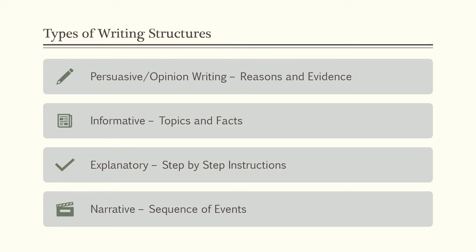There are three types of writing structures. Each of the standards, if you look at the grade level progress indicators, tells you exactly what you need to teach for each of those different types of writing. Persuasive or opinion writing is organized by reasons and evidence. We teach children to base their writing around a reason for their opinion and then cite different kinds of textual evidence.